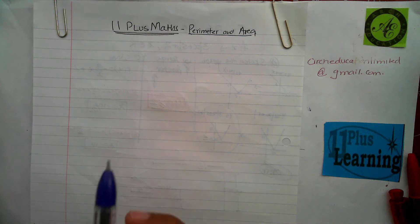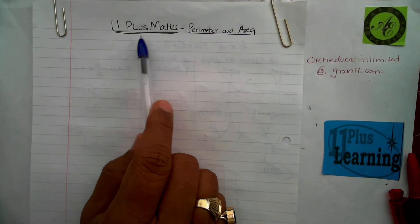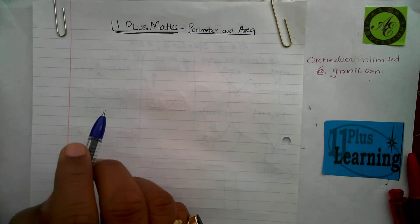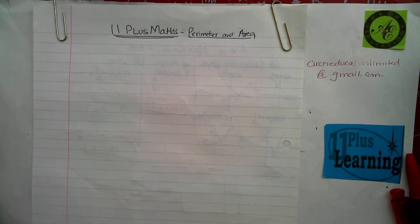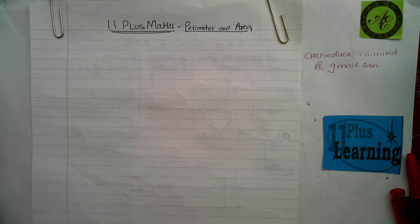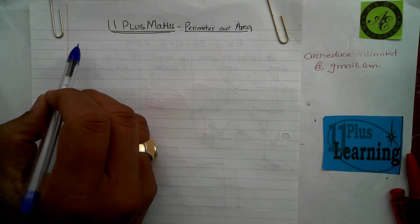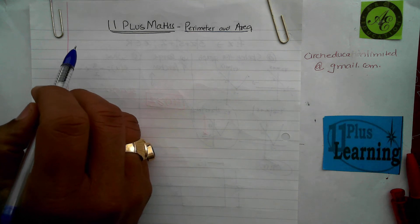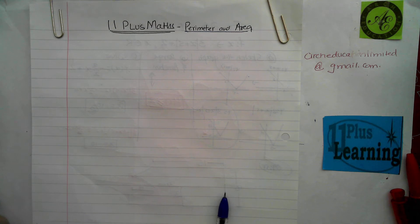Welcome back to another video for 11 plus maths by Arch Education Limited. The topic today is perimeter and area. I'm pretty sure you've seen this before in primary school. I'm going to pause the video and ask you to write down all the formulas you know to find the area of various shapes, and tell me what perimeter is.